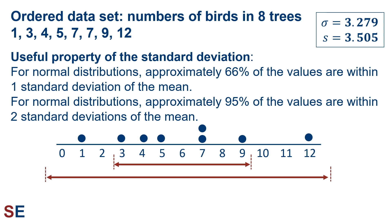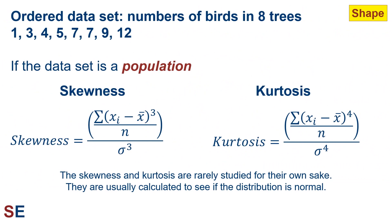Remember, this property of the standard deviation only holds if our data is normally distributed. So one of the things we want to know is whether our data is skewed or non-normal, which is what our next two statistics are for. The final set of statistics describe the shape of the distribution. We calculate skewness, which represents the asymmetry of our data values, and kurtosis, which measures aspects of the shape in terms of the height of the peak relative to the tails. The equations on this slide are the ones used when the data set is a population.